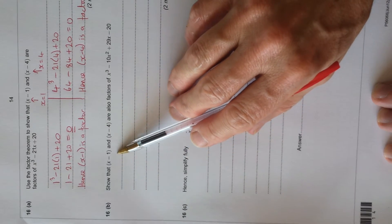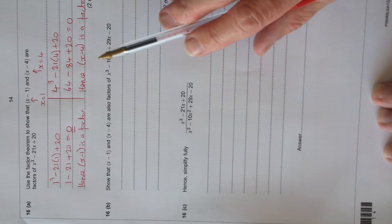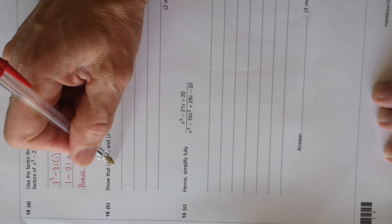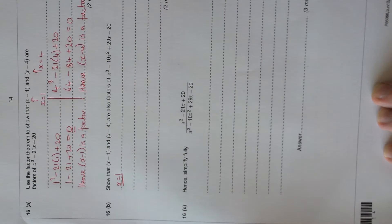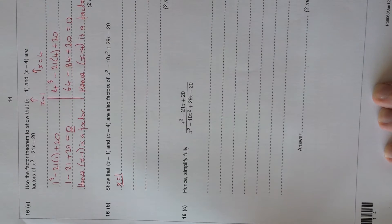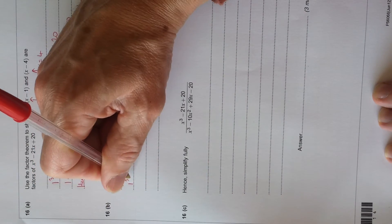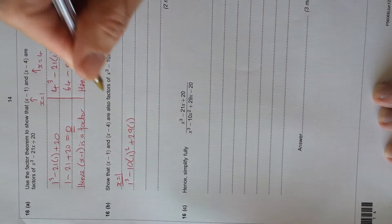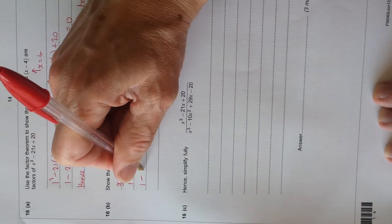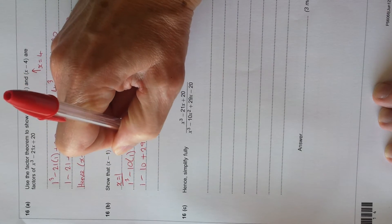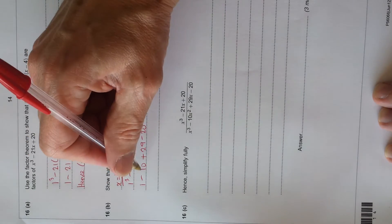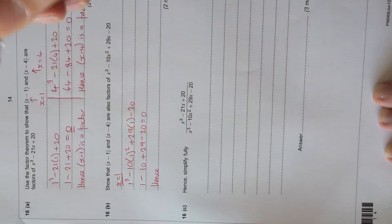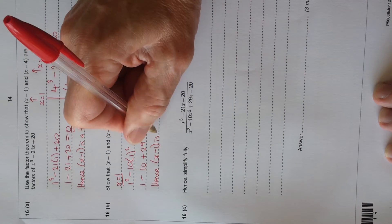Part B, show that x minus 1 and x minus 4 are also factors of x cubed minus 10x squared plus 29x minus 20. This is exactly the same. All you do is substitute x equals 1, find the answer, it should equal 0. So we'll do x equals 1 first. So we've got 1 cubed minus 10 times 1 squared plus 29 times 1 minus 20. So we've got 1 minus 10 plus 29 minus 20. So we've got 29 and 1 makes 30, minus 10 minus 20 makes minus 30, so it equals 0. Finish off with, hence, x minus 1 is a factor.